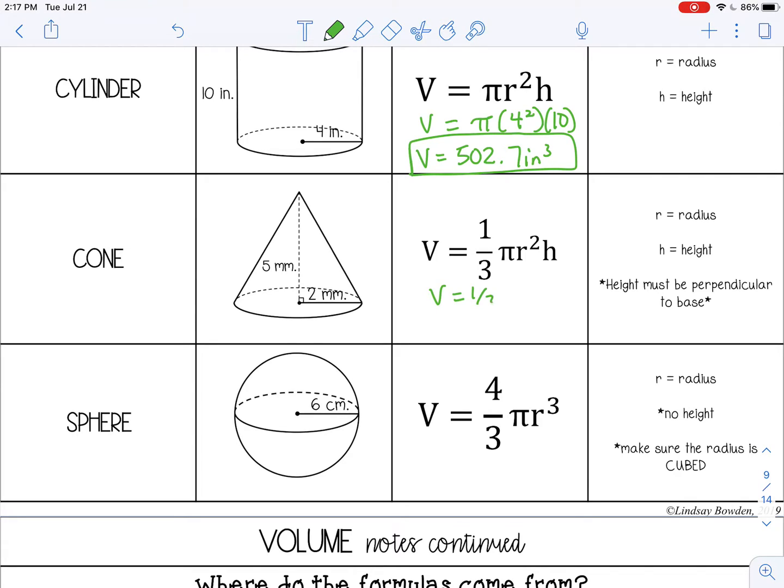So 1 third pi, my radius is 2 and my height is 5. And I get about 20.9 millimeters cubed.